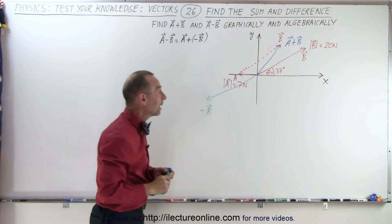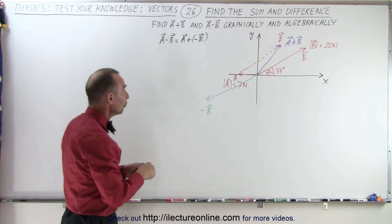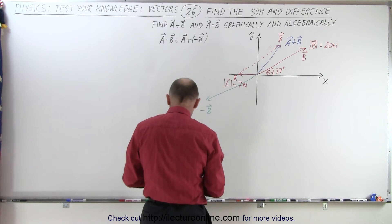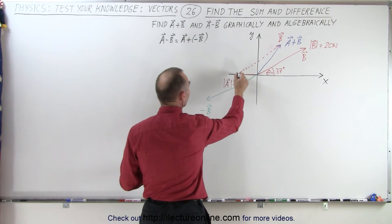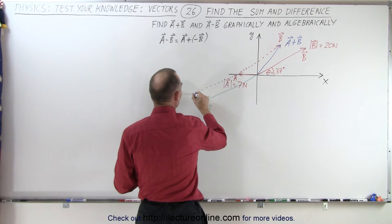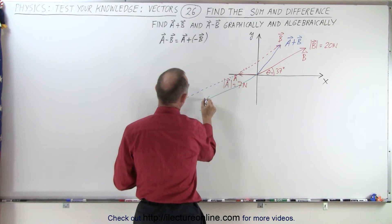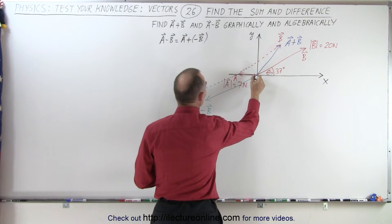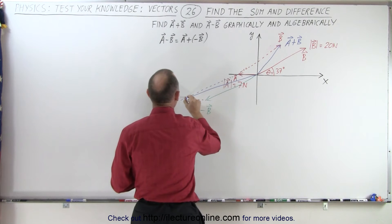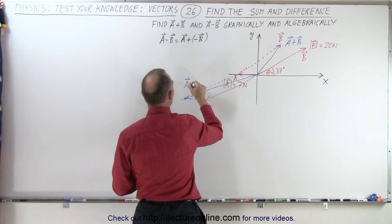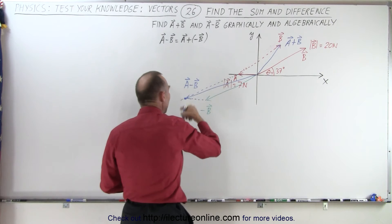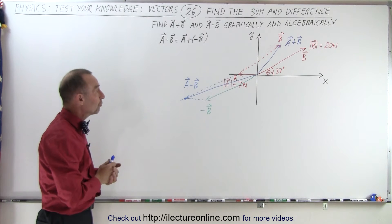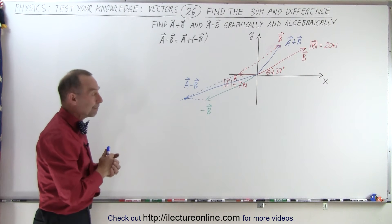And now all we have to do is add the vector A to vector negative B. We can do that by using the parallelogram method. In other words, I can draw a line parallel to vector B here. I can draw a line parallel to vector A here. And notice where the two meet. That will be the resultant of A minus B, which is the same as A plus the negative of B. So that's how we add and subtract the two vectors graphically.